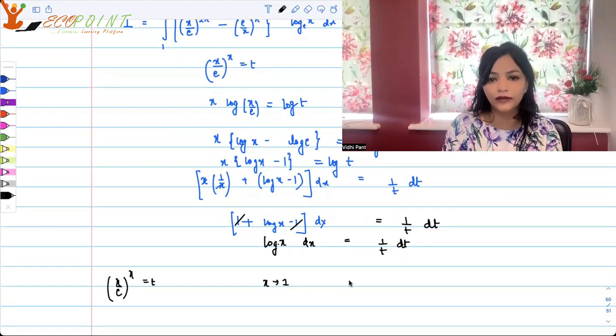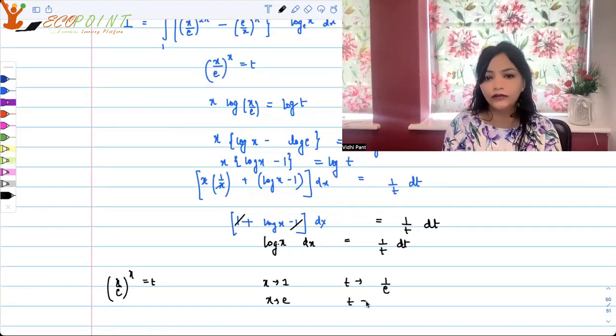So when x is 1, t is 1 upon e. And when x is tending towards e, when x is e, t is 1 to the power e, that is just 1.